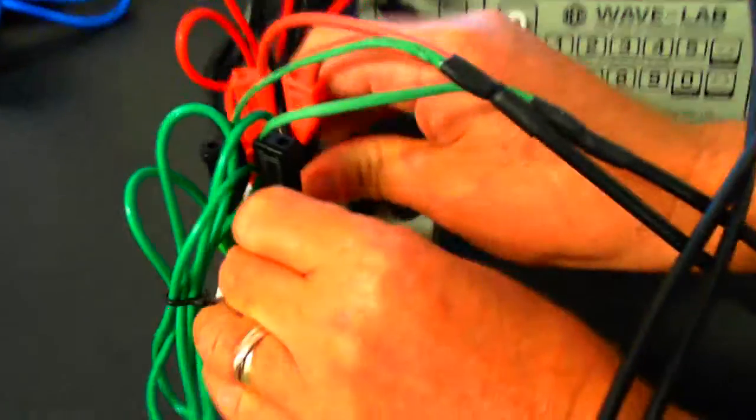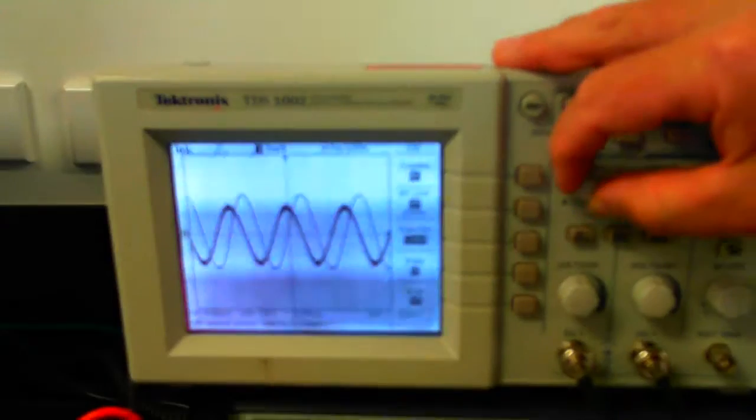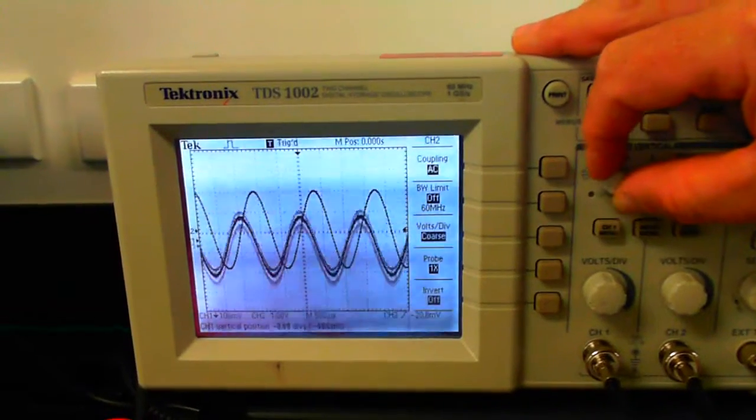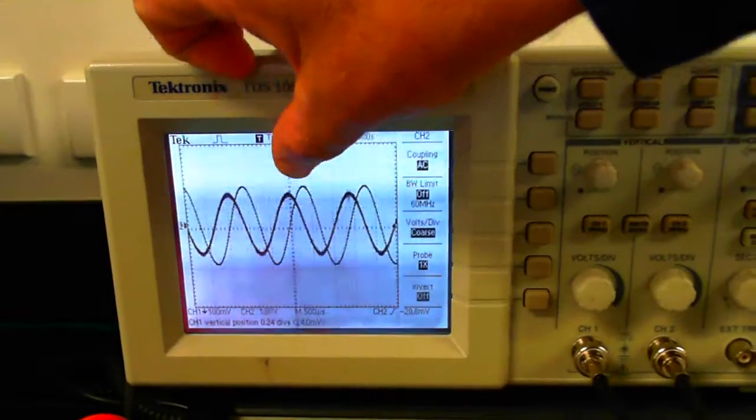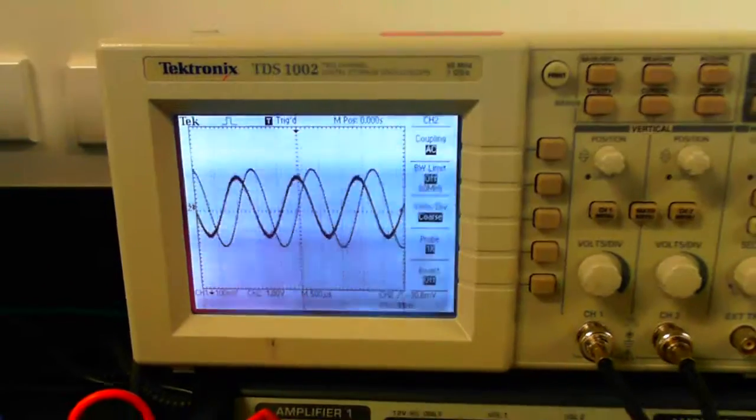If I then go and move the probes across the capacitor, you'll notice we have the current again, which I'm moving. And you can see the current peak happens before the voltage peak. Therefore, current leads voltage.